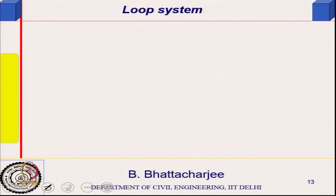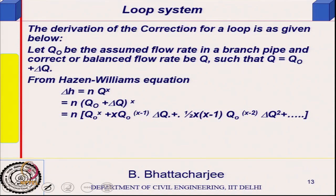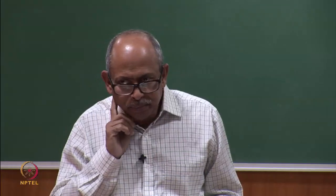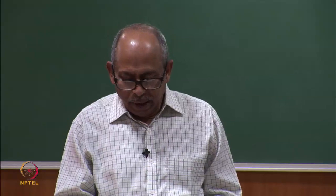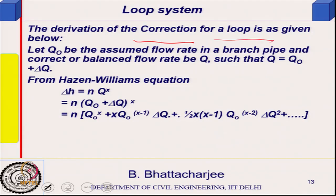In the Hardy-Cross method, the basic equation requires finding Σhf in a loop — that should equal zero; if not, that is the error and a correction ΔQ must be applied. Assume q₀ as the initial flow rate in a branch pipe and correct to the balanced flow rate. We will derive the expression for ΔQ, the correction term.